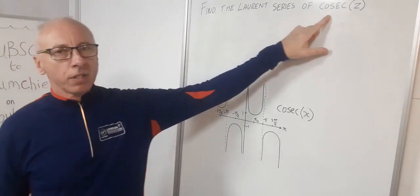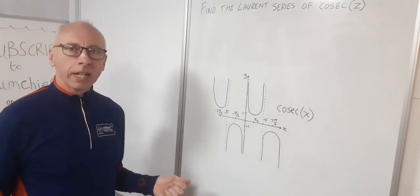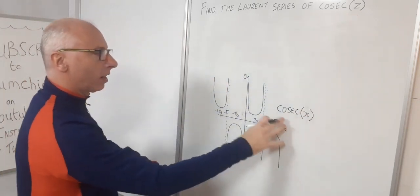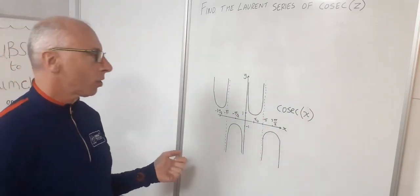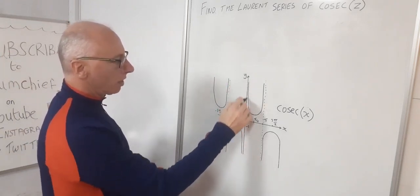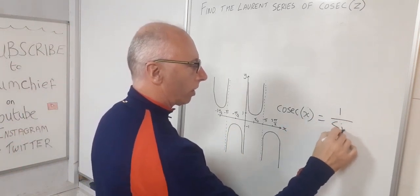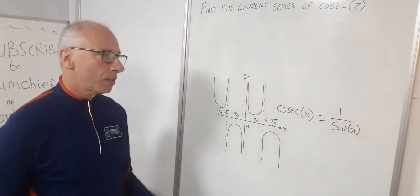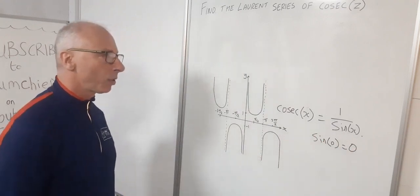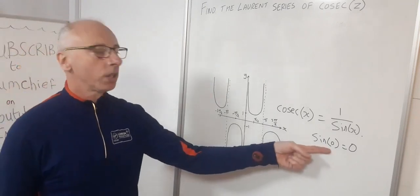In this video we're going to find the Laurent series for the cosecant function of Z. Some people will ask why can't we just call it the Taylor series. If we try and find the Taylor series for cosecant of X at the point zero — the Maclaurin series — you'll see on the graph it goes off to positive infinity on one side and negative infinity on the other. Cosecant of X is 1 over sine of X, and since sine of 0 equals 0 we have a 1 over 0 situation. Sometimes we could try a Taylor series, but the limit as X approaches 0 does not exist.